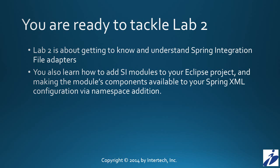With that, you're ready to tackle lab number two. In this second lab, you're going to get a chance to work with a Spring Integration file adapter — in fact, two different file adapters: an inbound and an outbound file adapter. You'll also learn how to add a Spring Integration module to your Eclipse project using Maven and a POM file, and you'll see how to use those module components in your Spring Integration XML configuration with the addition of namespaces. Good luck with lab two, and join us again as we tackle more endpoints going forward in this Spring Integration tutorial.